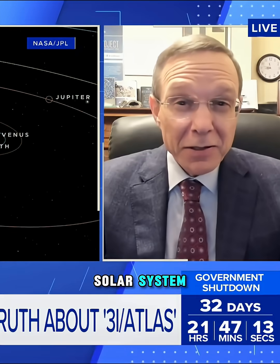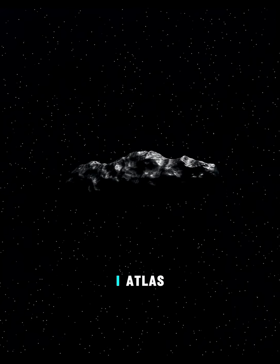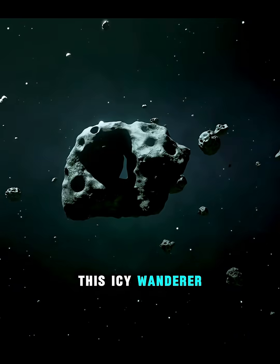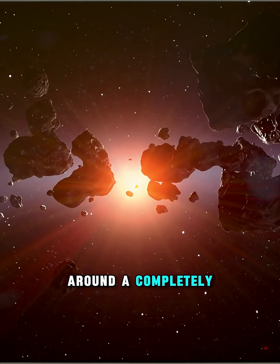A mysterious object has entered our solar system, and it didn't come from anywhere nearby. Known as 3i Atlas, this icy wanderer has traveled light years through interstellar space, carrying material formed around a completely different star.